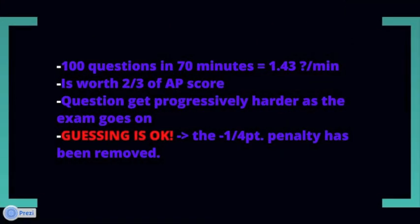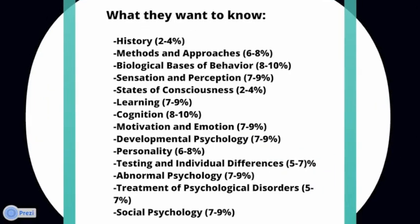Let's talk about section one. There are 100 questions in 70 minutes, which means that you have to answer 1.43 questions per minute. This part of the test is worth two-thirds of the AP score. Questions get progressively harder as the exam goes on. If you just don't know the answer to a question, guessing is okay — you might as well get some free points. The one-fourth penalty has been removed, so you won't be penalized for guessing. As a last resort, just guess.